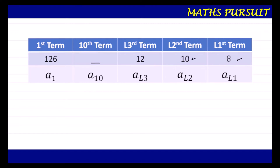I have considered 10 as our last second term and 12 as our last third term. In our given question, 8 was the first term, 10 was the second term, and 12 was the third term. But when I reversed it, I named them last-first term, last-second term, and last-third term. The 10th term will fall further along, and the original last term 126 is now made the first term — because the question asked us to find the 10th term from the end.